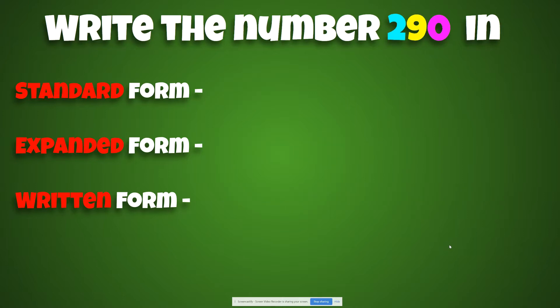Write the number 290 in standard form, expanded form, and written form. Good job. Hi, Mario. All right, guys. Let's check our answers. For standard form, it is written 290. The digits 2, 9, 0.